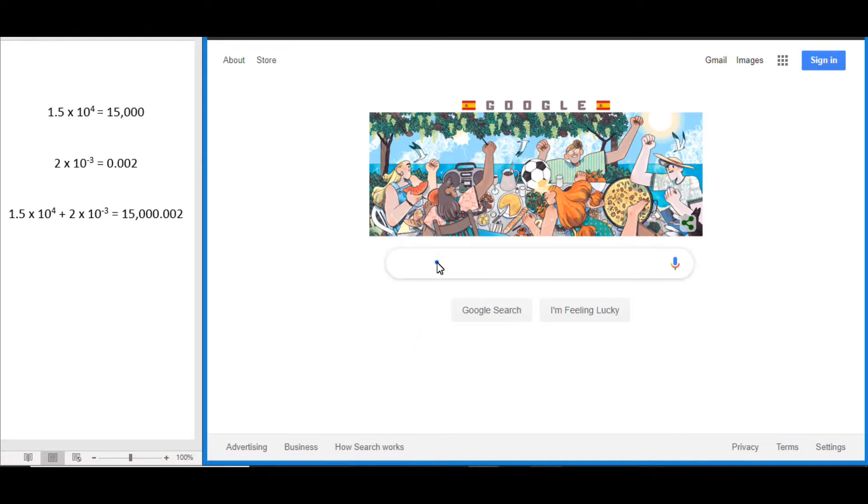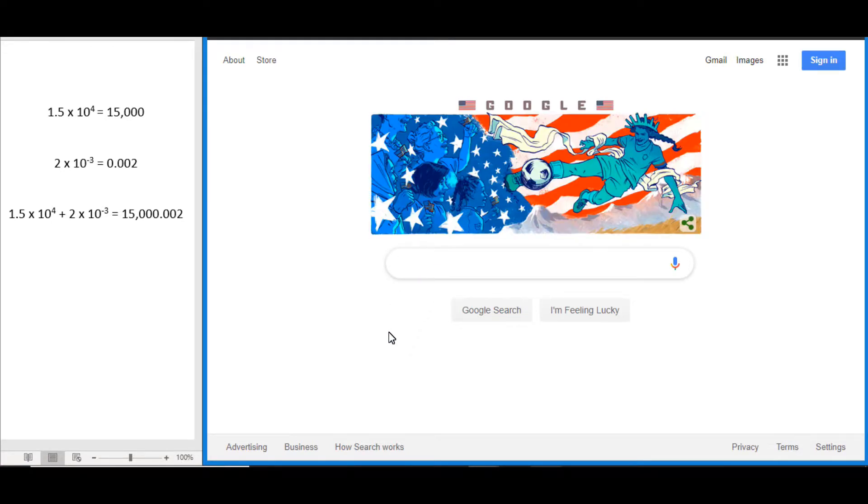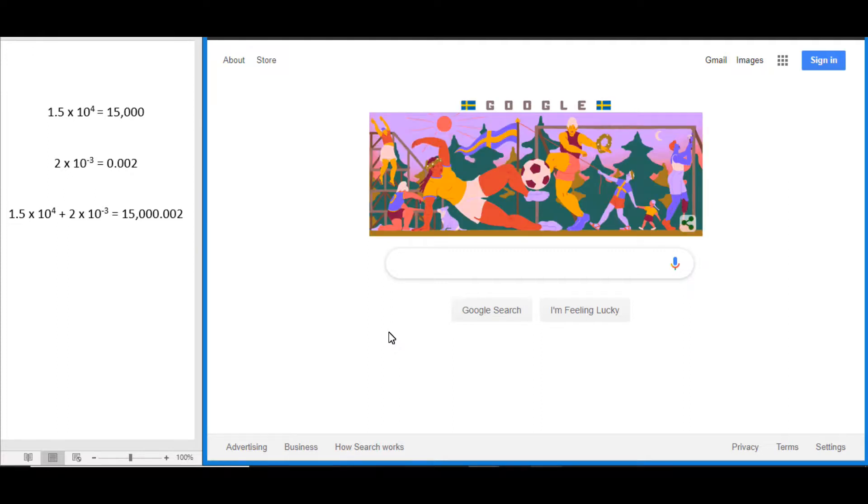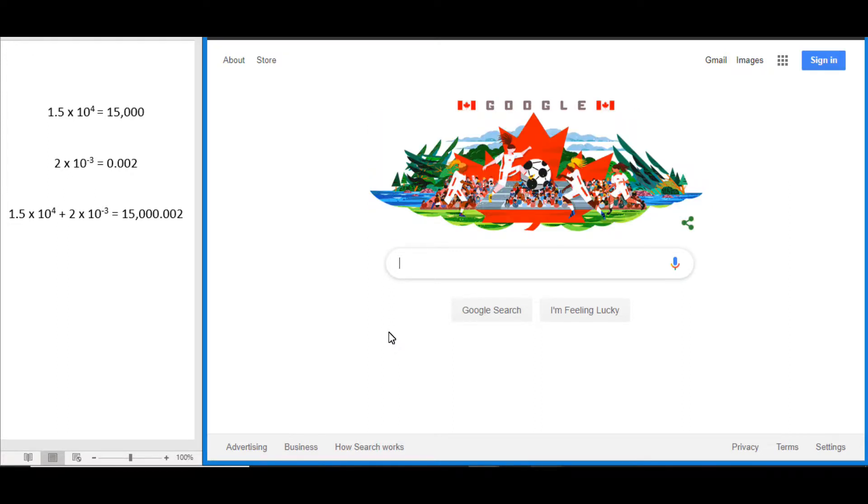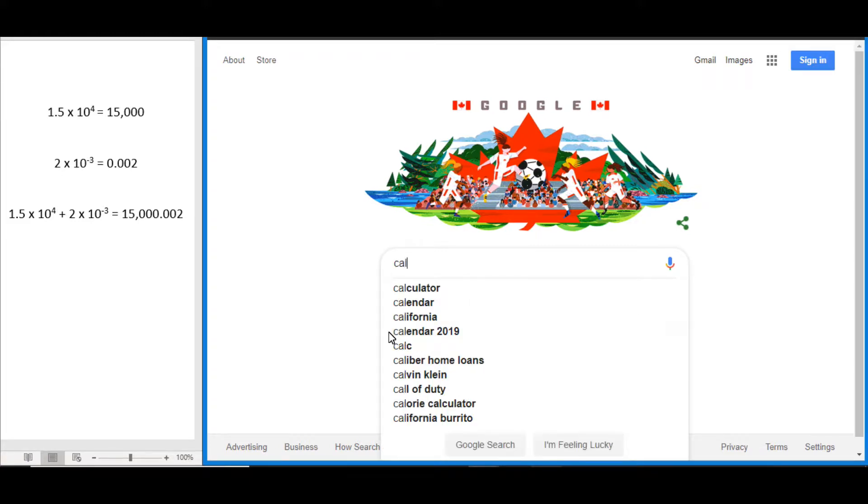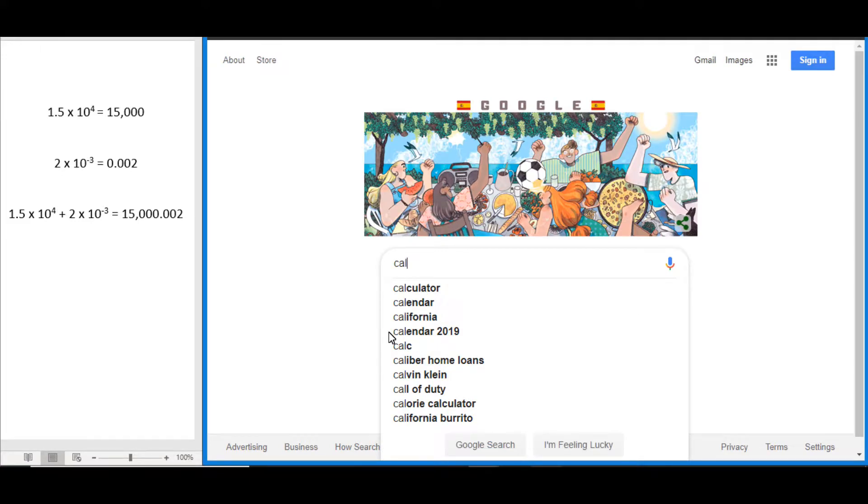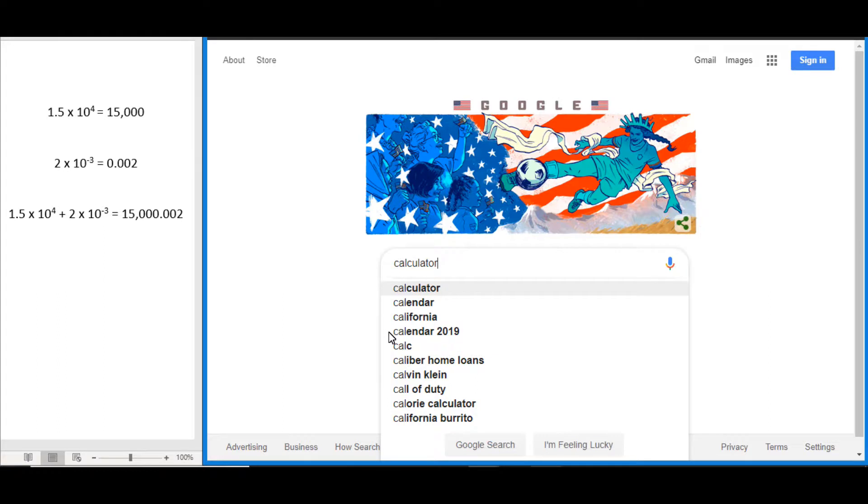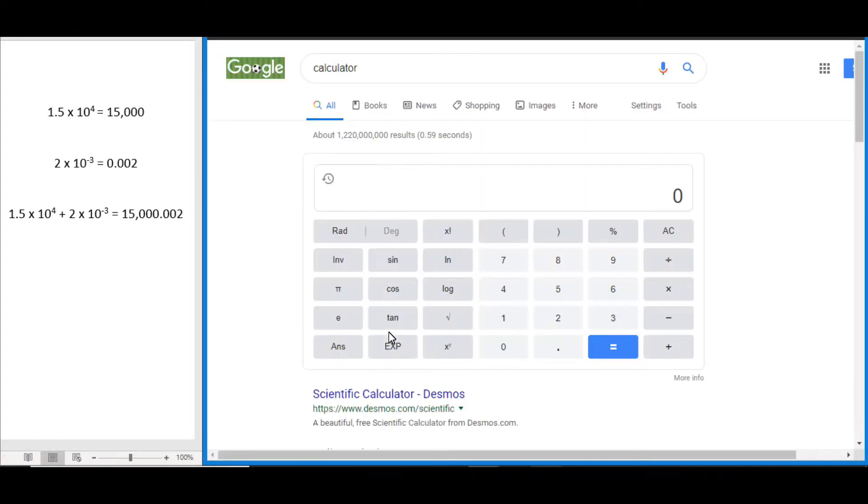This is a super easy calculator to use because it's pretty much always available as long as we've got a computer and an internet connection. To get to it, we just go to Google and enter the word calculator. You can usually just write C-A-L and it'll pop up. Scroll down to it, hit enter, and it brings us to this page with the calculator right here.